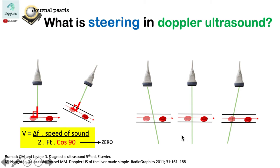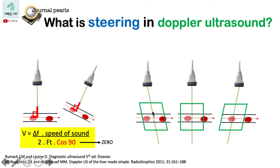So what we do is to send the pulse at an angle, just like this. What is usually available is we can adjust the angle to 20 degrees or minus 20 degrees. These pulses are parallel to the steering boxes that we see.